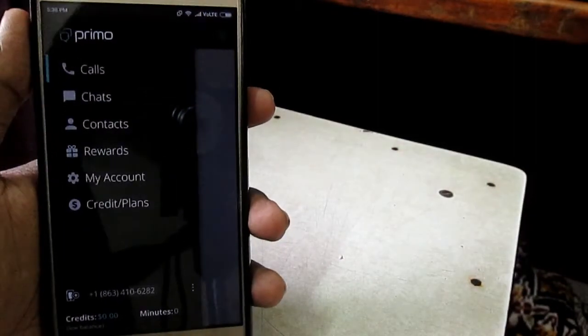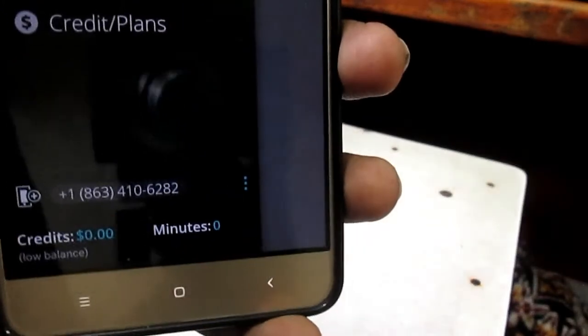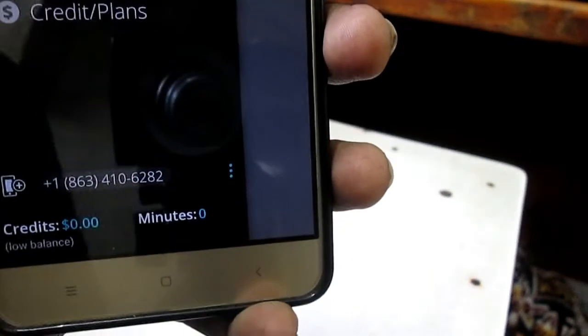Now click on add phone. Then you will get a USA number. Just note it down somewhere because we will be using it for our new WhatsApp account.